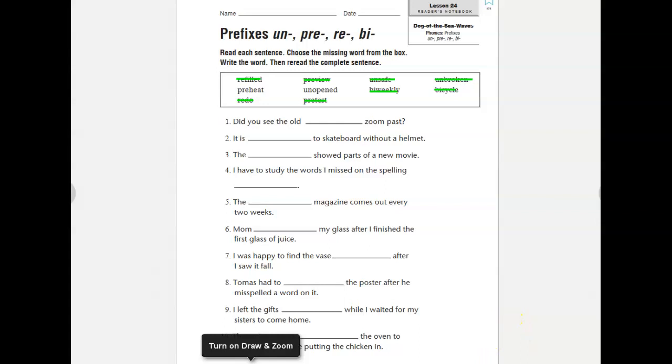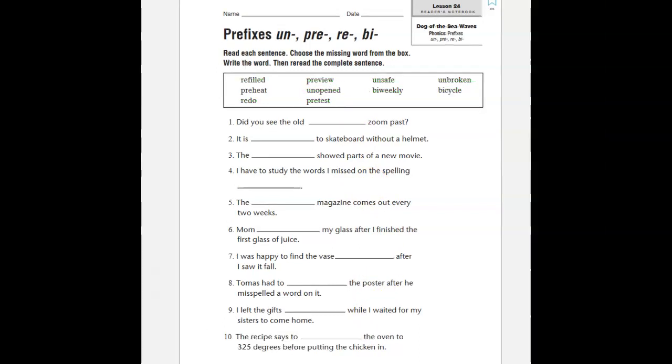Number nine, I left the gifts blank while I waited for my sisters to come home. Sounds like they left them unopened, as in not opened. And then number ten, the recipe says to blank the oven to 325 degrees before putting the chicken in. That would be preheat. And I know my little beautiful green lines went away. Sorry, guys.